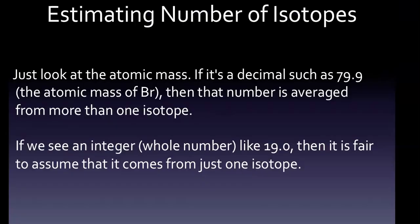When estimating a number of isotopes, we just want to look at the atomic mass. If it's a decimal such as 79.9, which is the atomic mass of bromine, then that number is averaged for more than one isotope. However, if we see an integer, a whole number such as 19.0 or any number 0.0, then from our standpoint it's fair to assume that it comes from just one isotope.